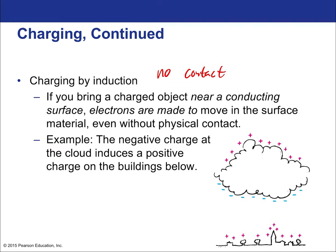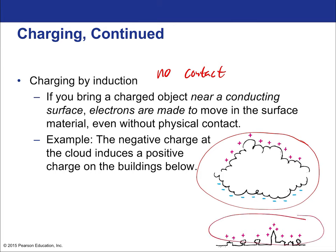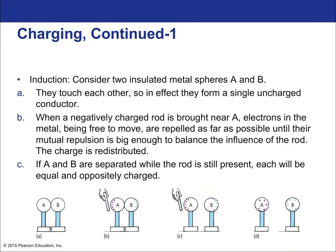If you bring a charged object near a conducting surface, electrons are made to move in the surface even without physical contact. An example is inductive charging from a cloud: the negative charge at the cloud induces positive charge on the buildings below. That's why a charged cloud can charge up the ground below—pushing electrons into the ground, creating a net positive charge on tall objects, which can lead to ionization of the air and lightning.